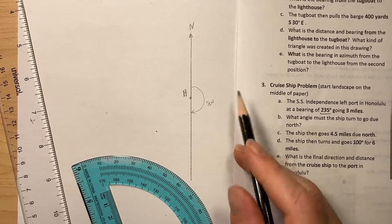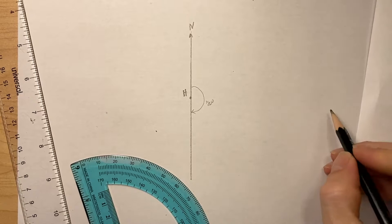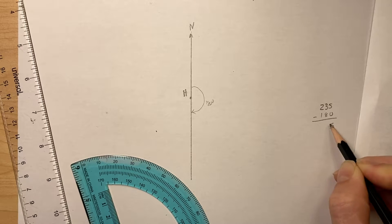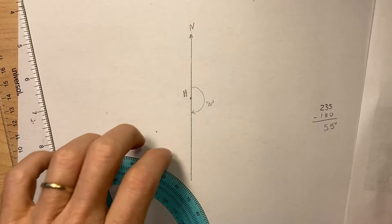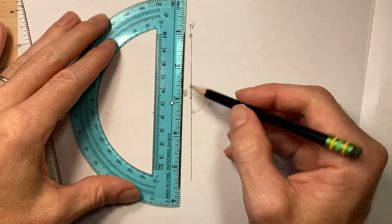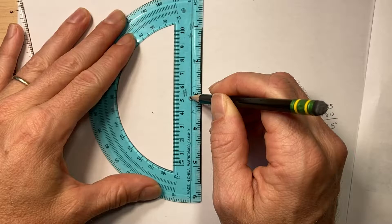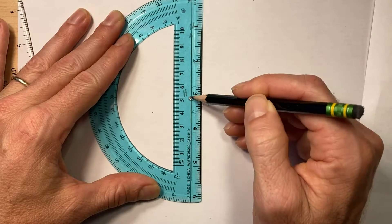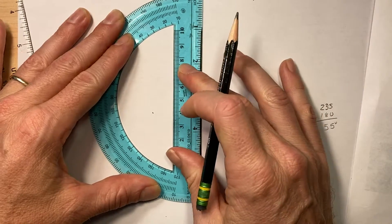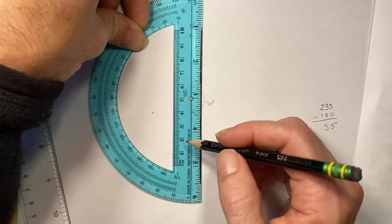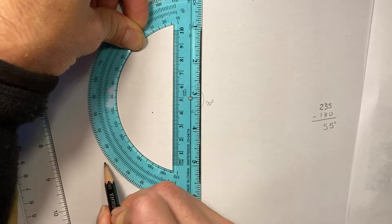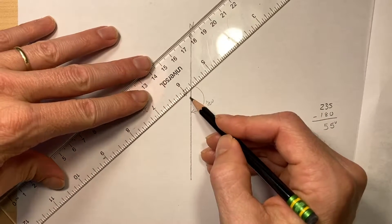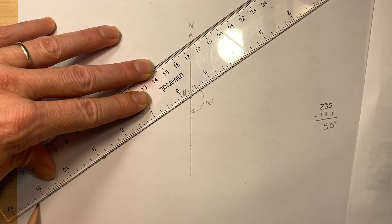So I need to go 55 more degrees, so I can put my compass here with my center at Honolulu. Make sure my north-south lines are lined up along the zeros of the protractor. That's a compass protractor, and we're going 55 degrees, so that's right here. And then now I can draw a ray through that.